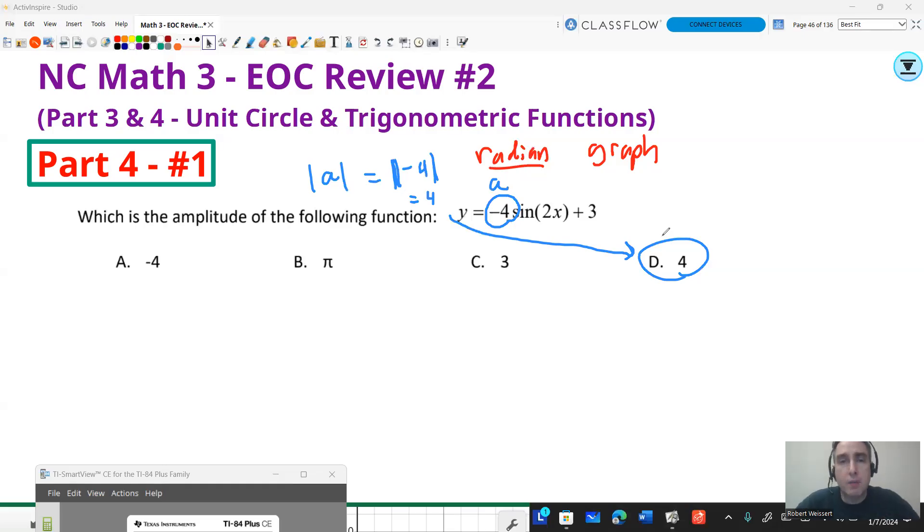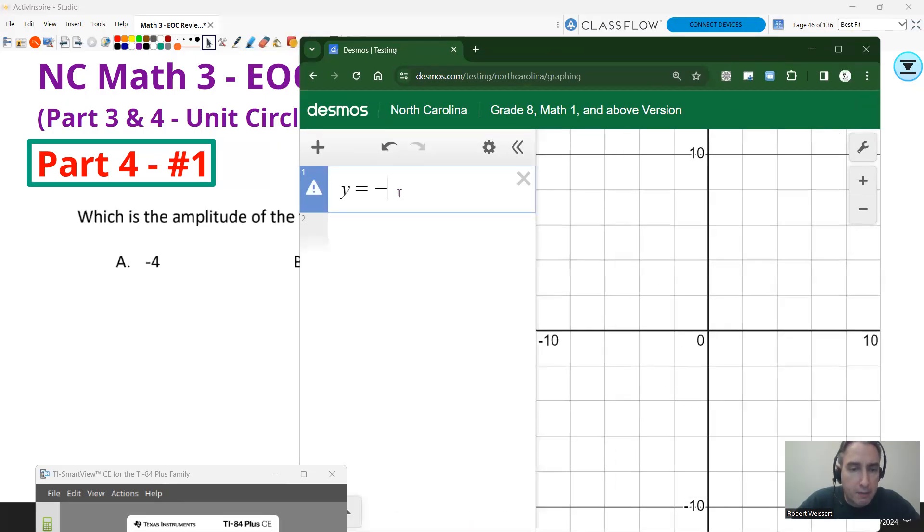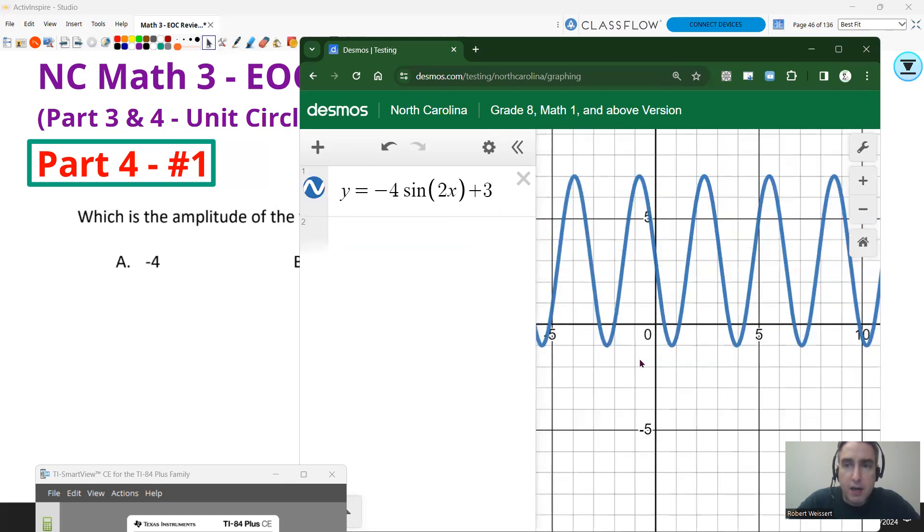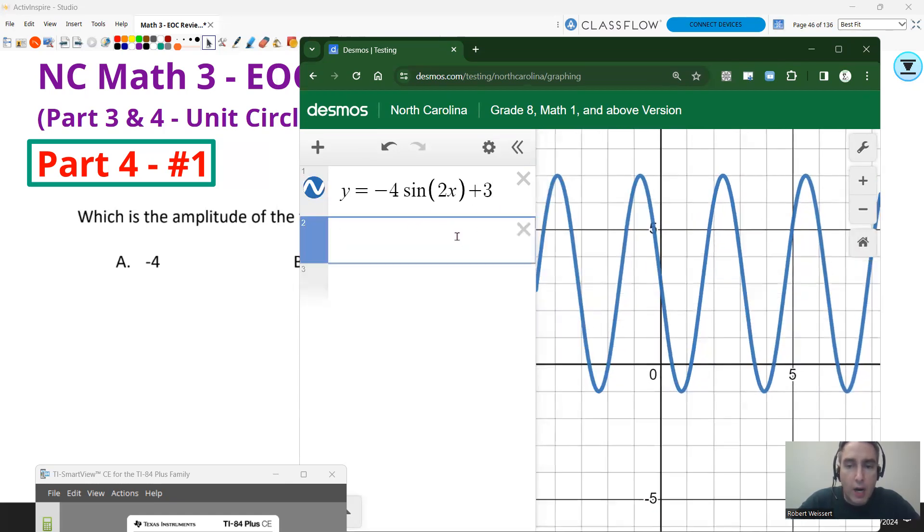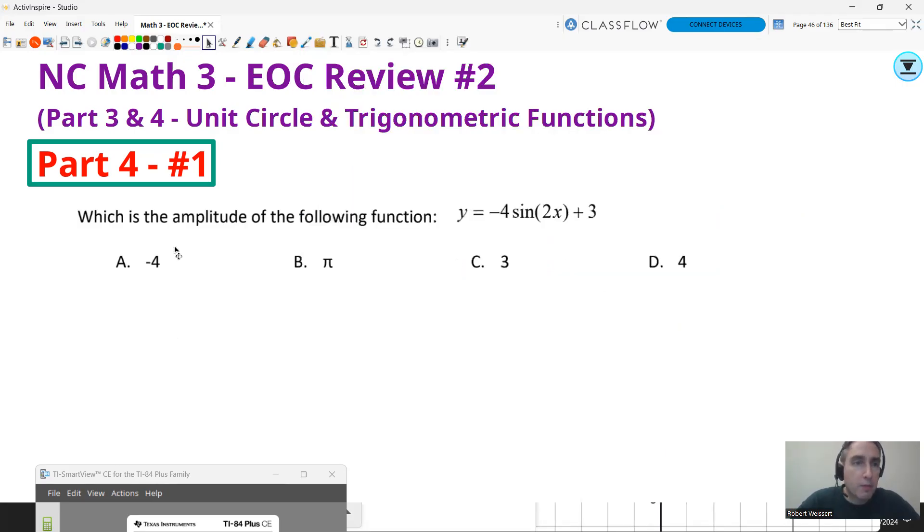Now if you want to see that as a graphing problem, put that in your Desmos graph. Just make sure you select radians when you're graphing. And when you put that in, y = -4·sin(2x) + 3, I can see that it's kind of hard to tell. But if you graph your midline, y = 3, you can go from there, that y value being 3, to the max value of 7. And you can see that vertical distance is 4. I could also go to -1, that vertical distance from 3 to -1 is also 4. So that is my amplitude, 4 units. So yeah, it's going to be a positive number. 4 is your answer.